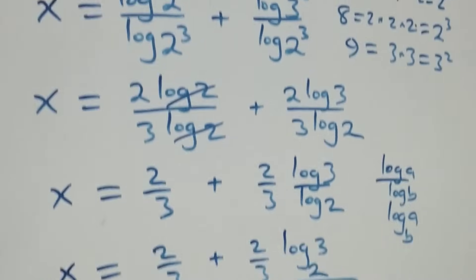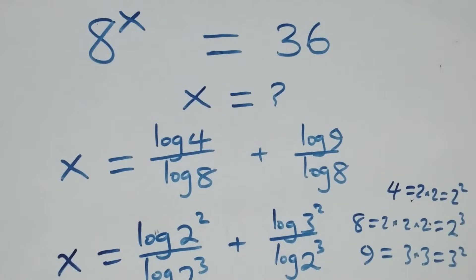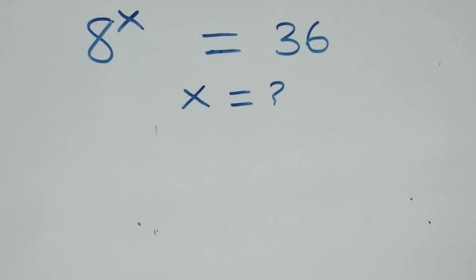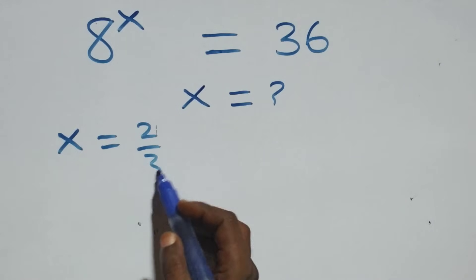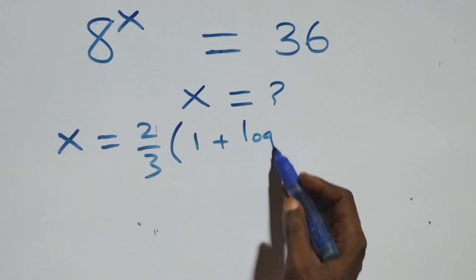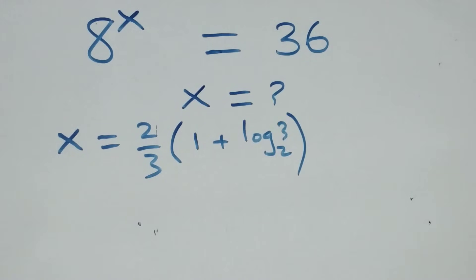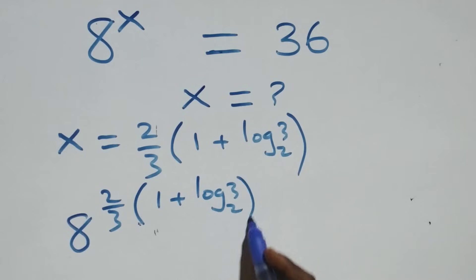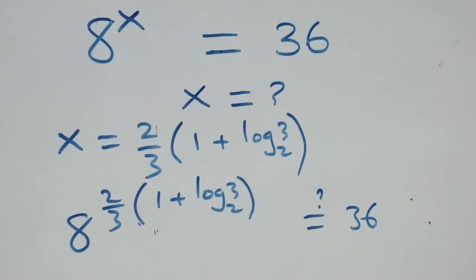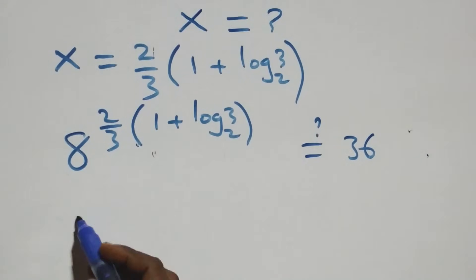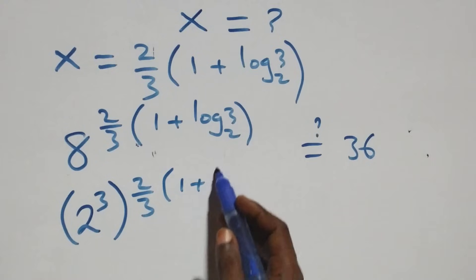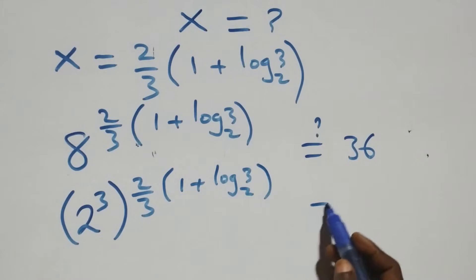Now let's check whether this value of x satisfies the given problem. We substitute x equals to 2 over 3 times (1 plus log 3 base 2) back into the equation. This gives us 8 raised to power [2 over 3 times (1 plus log 3 base 2)] equals to 36. We express 8 as 2 raised to power 3, giving us 2 raised to power [3 times 2 over 3 times (1 plus log 3 base 2)] equals to 36.